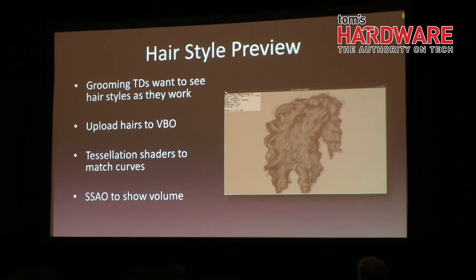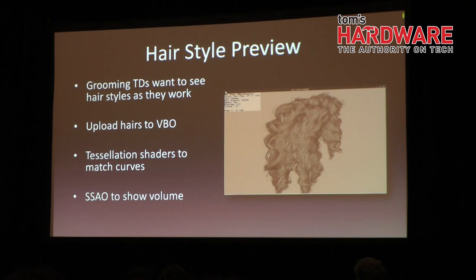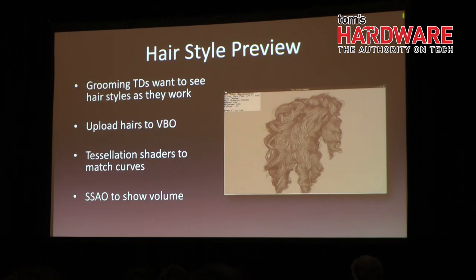We have a similar hair preview called the Throom for our animators, which can be dynamically posed and animated, but has a little less detail. It has fewer shapes and it's less tessellated. But it allows us to see, during animation, where hair will cover other objects, where that's important for animators.